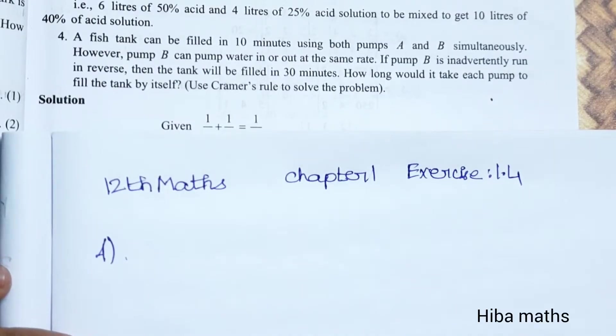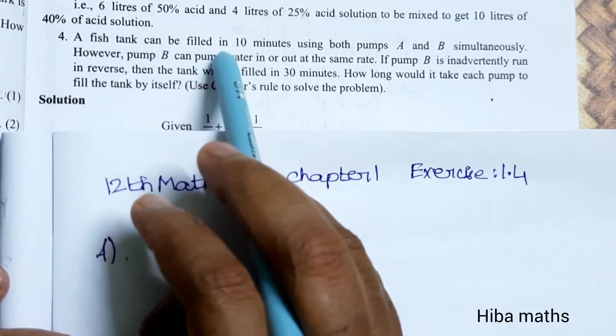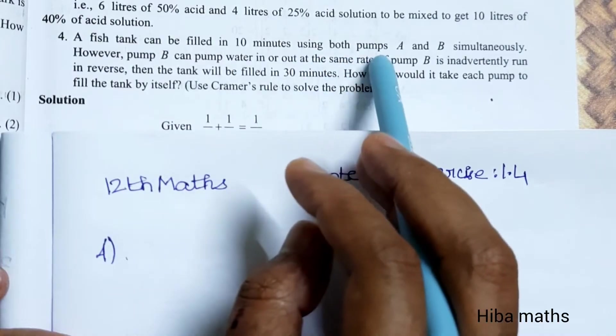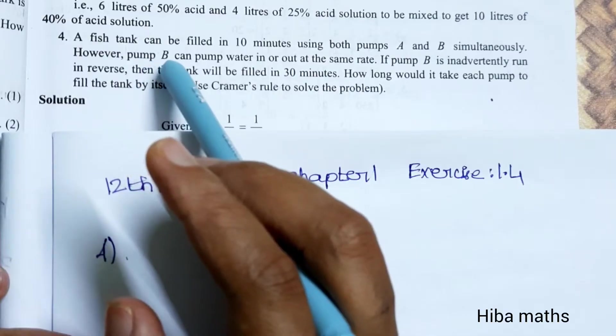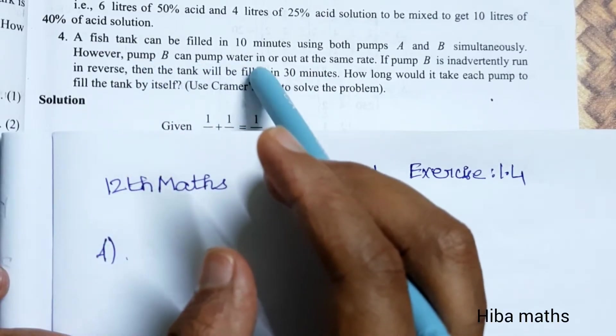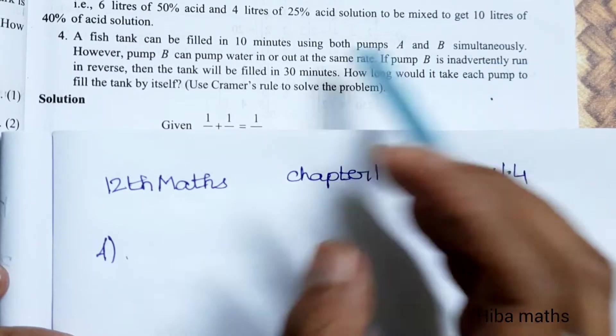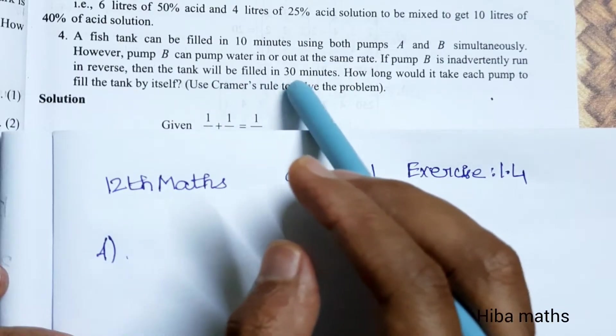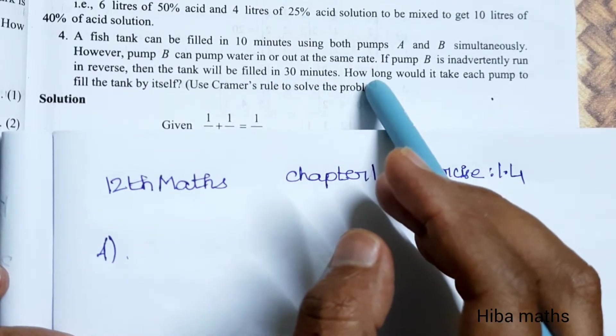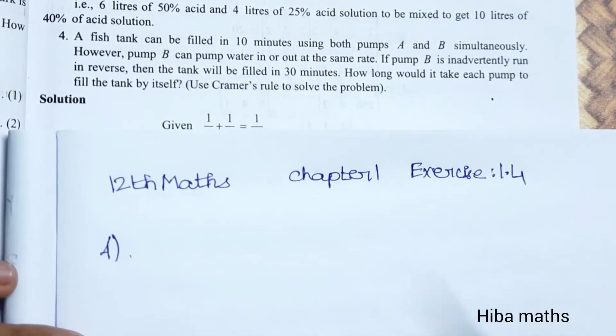Hello students, welcome to Hiba Maths, 12th standard maths chapter 1 exercise 1.4, the 4th question. A fish tank can be filled in 10 minutes using both pumps A and B simultaneously. However, pump B can pump water in or out at the same rate. If pump B is inadvertently run in reverse, then the tank will be filled in 30 minutes. How long would it take each pump to fill the tank by itself? Use Cramer's rule to solve the problem.